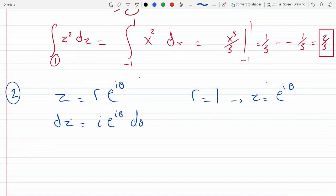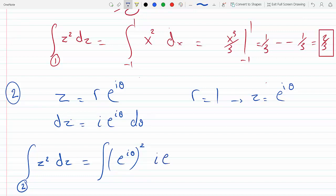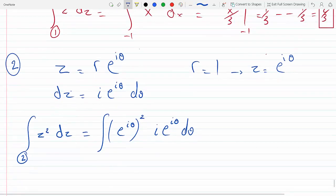On path number two, z squared dz would become e to the i theta squared times dz, which is i e to the i theta d theta. Where are we integrating from? From zero on the right hand side, and this is a semicircle, so it's going to pi.